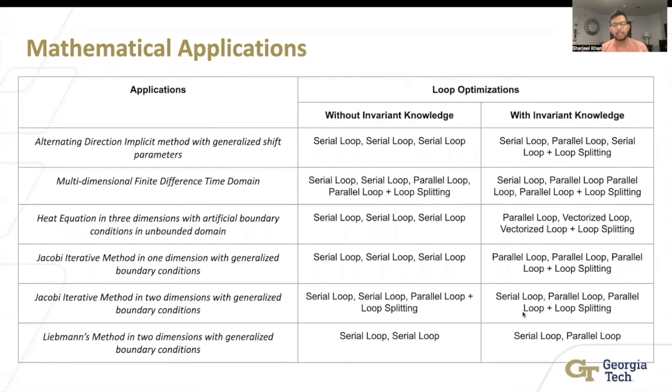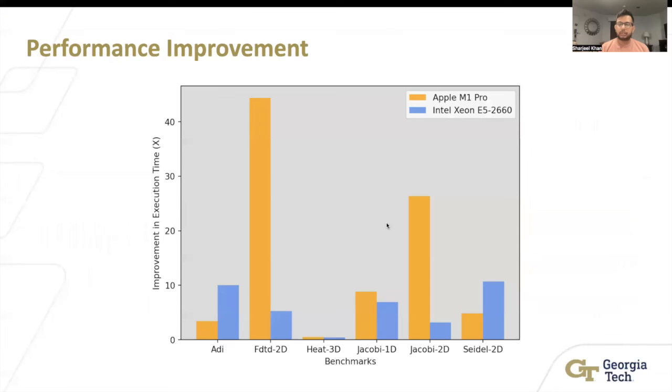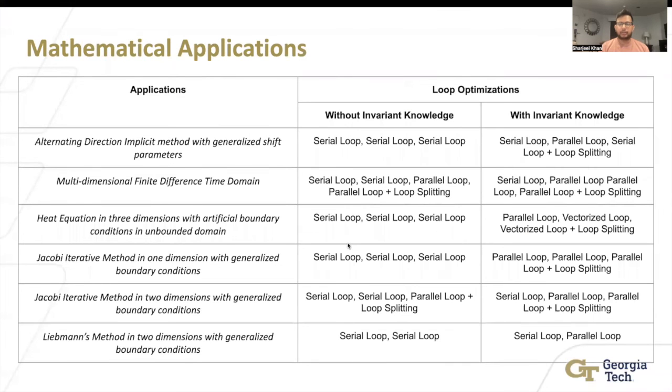And you can see how the dependencies actually help you, because if you look at this particular case right here, if you had no knowledge, it'd be a bunch of serial loops. Now with knowledge, you of course have to see your loops, but you also have some parallel loops with OpenMP pragmas, or you have some loop tiling to make it better. Sometimes you have also vectorized loops. And all these combined improve the performance, and lead to this big jump of performance improvement, not only on Intel Xeon chips, but also on Apple M1 Pros.